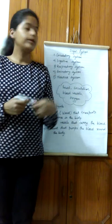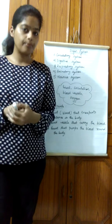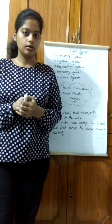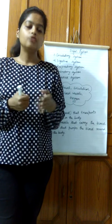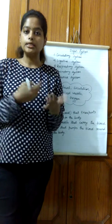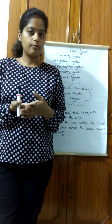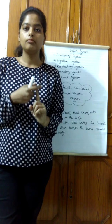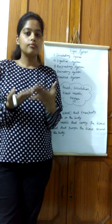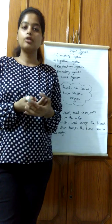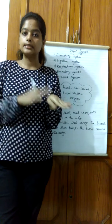Hello students, today we are going to discuss about organ systems. Yesterday we discussed about various organs present in our body. Let's quickly revise: how are organs divided in our body? Into two parts — internal and external. Internal because they are present inside our body, and external because they are outside. Internal organs include heart, liver, kidneys, and brain. External organs include eyes, ear, nose, mouth, and skin.